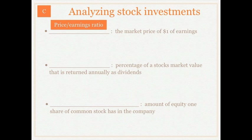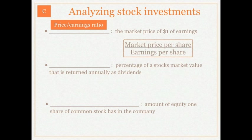The first one is the price-earnings ratio. The price-earnings ratio is the market price of one dollar of earnings — what one dollar of earnings for our company is actually worth in the market. To calculate this we take the market price per share and divide that by our earnings per share.